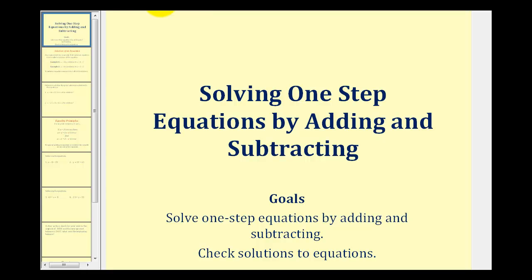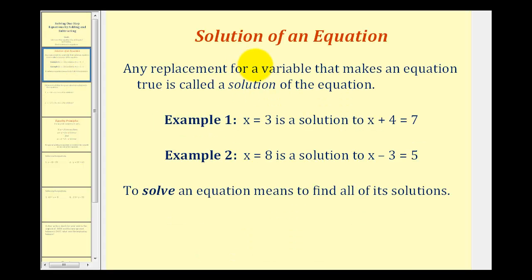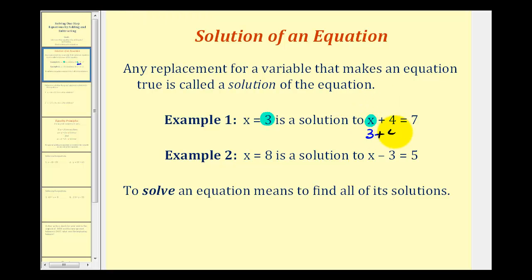Welcome to a lesson on solving one-step equations by adding and subtracting. Let's first talk about the solution of an equation. Any value of a variable that makes an equation true is called a solution to an equation. So x equals 3 is a solution to x plus 4 equals 7 because if we substitute or replace x with 3, it satisfies this equation — 3 plus 4 equals 7 is true — therefore x equals 3 is a solution.